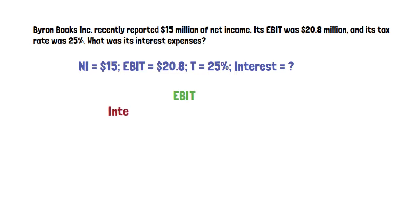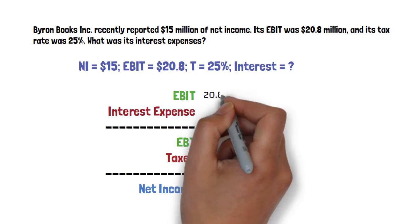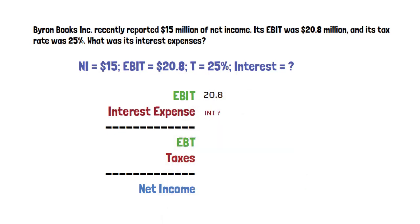So let's set up an income statement to understand its layout. EBIT is given as $20.8 million. Let's assume interest is INT. EBT is not given but we know it is the difference between EBIT and INT expense.